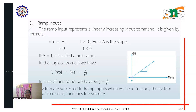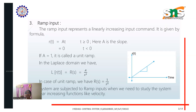The ramp input is given by the formula r(t) = a·t, where a is the slope, when t is greater than or equal to zero. When t increases, r(t) increases linearly. When t is less than zero, the value is zero. If a equals one, it is called a unit ramp signal.